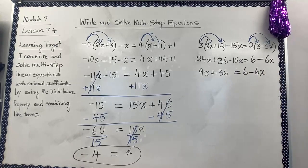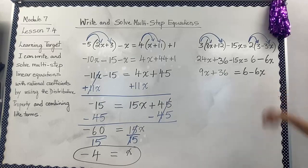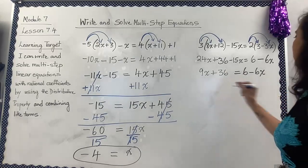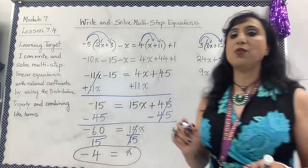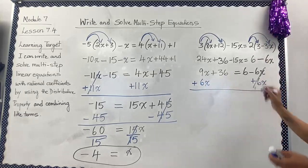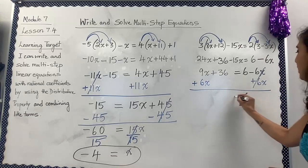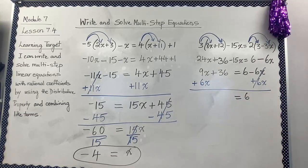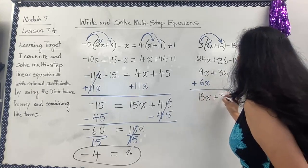Now I'm going to combine the like terms. I can see 24x and minus 15x are like terms. 24 minus 15 gives 9x, plus 36, equals 6 minus 6x. Then I use the addition property of equality to get rid of the minus in front of the variable, adding 6x to both sides. 6x minus 6x is zero, leaving 6 equals 9 plus 6, which is 15x plus 36.